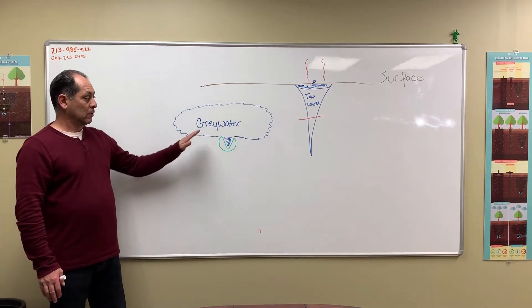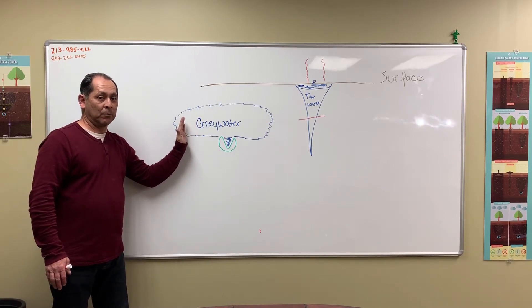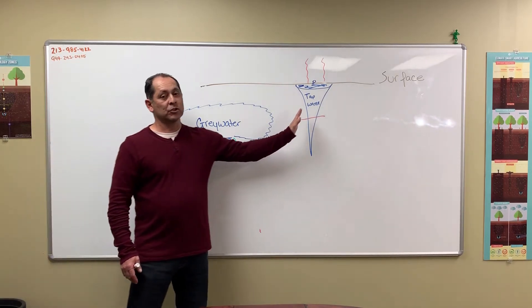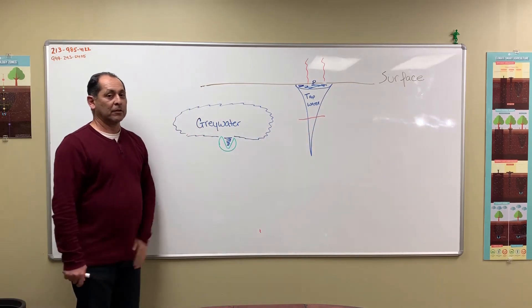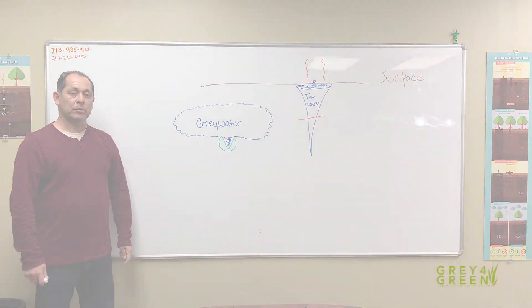So 100% gray water, 0% tap water, just a reduction of your tap water. I think that's a big difference, so thank you for using gray water in your next irrigation project.